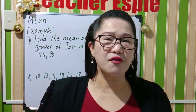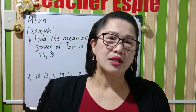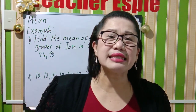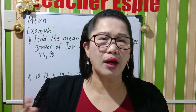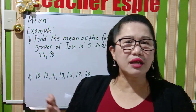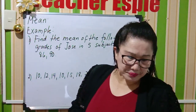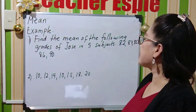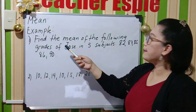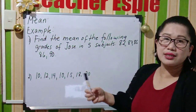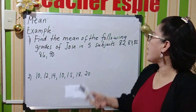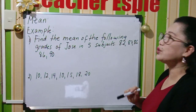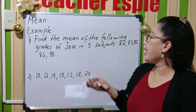Before we proceed, let us define what the mean is. When we are talking about the mean, this is the average — you add all the values and divide by the number of values. For example, find the mean of the following grades of Jose in five subjects: 82, 83, 85, 86, and 90.